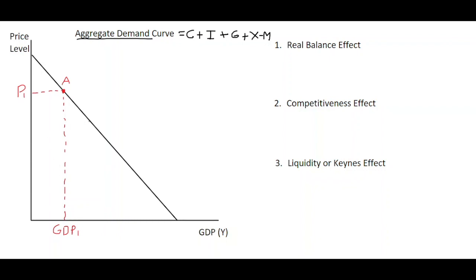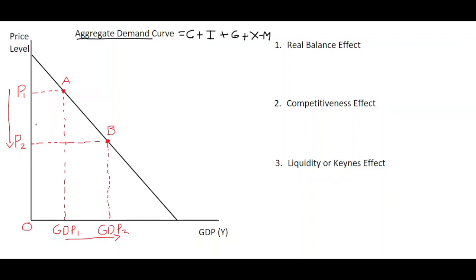Now if we move to point B down here, what we see on the aggregate demand curve is that the price level has reduced to P2. So there's a reduction in the price level, and what we see is that the level of spending on output in the economy has increased — GDP2 is further along than GDP1. So as the price level drops in the economy, the spending on goods and services increases. There is a negative relationship between the price level and the general overall aggregate expenditure level.